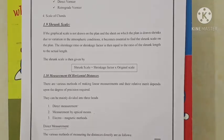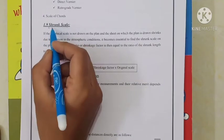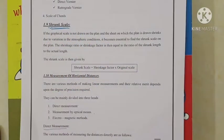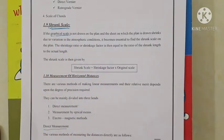In the last session we saw errors and the concept of errors. Now we will see what is shrunk scale. Whenever we see a plan there will be a scale written on it called geographical scale. If this geographical scale is not written on a plan, then the sheet on which the plan is drawn will shrink.